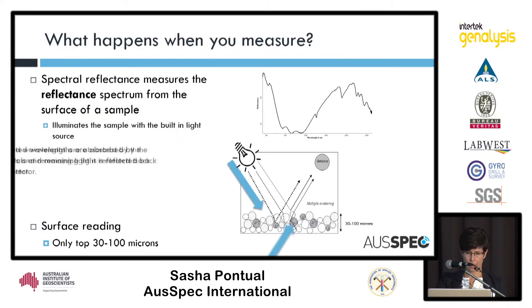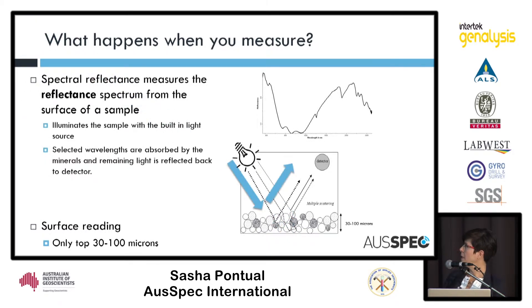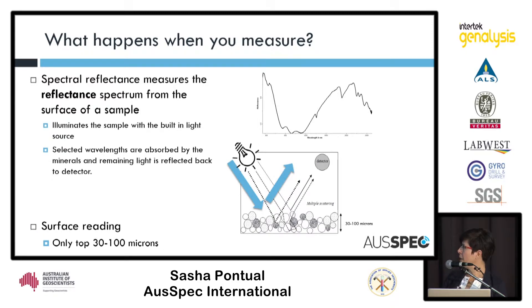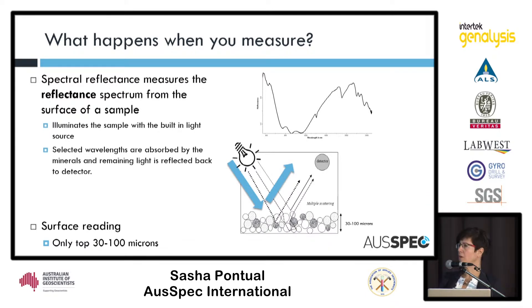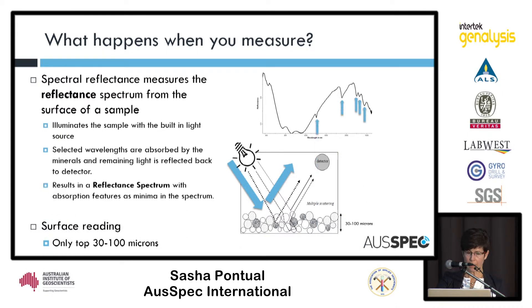Just going through quickly how the process happens. When dealing with spectral reflectance, spectrometers usually have an internal light source which shines on the surface of the sample. That light will interact with your material within the top 30 to 100 microns of your sample, and then the remaining light will be reflected. With the interaction with your sample surface, you end up with absorption features relating to the minerals present within that layer.